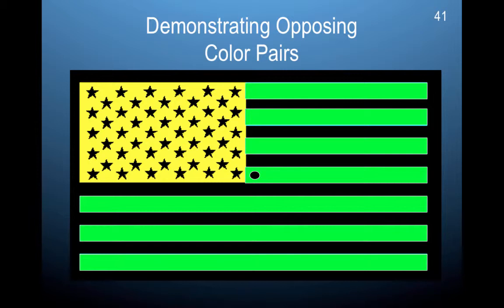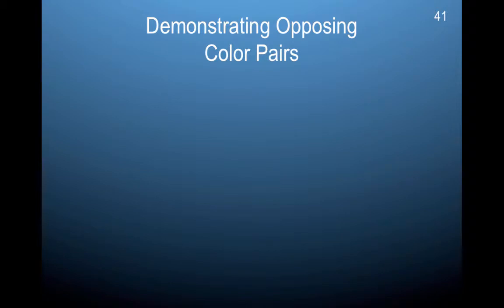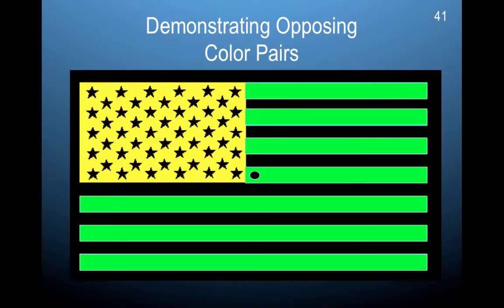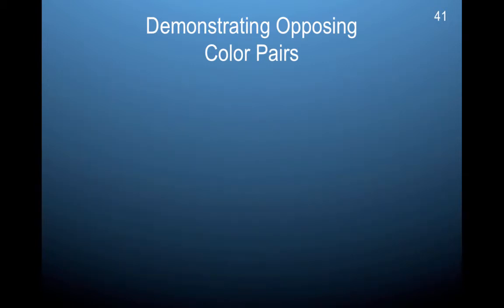Here is an example demonstrating some color opposing pairs. If you stare at the dot in the center, let all the colors rest on your retina for a minute, and just stare at it. Then, once I take it off the screen, you'll see differences in color. After I removed it, you might have seen a very brief afterimage that basically corresponded to the actual colors of the flag — where there was yellow, you would see blue, and where there was green, you would see red. That contrast effect is something that the trichromatic theory cannot explain.